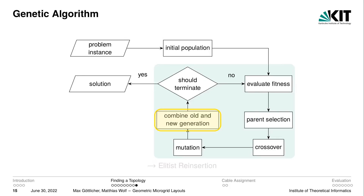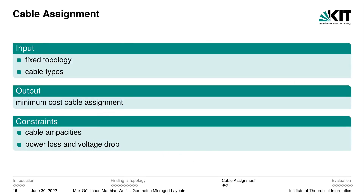After this we have a population of child individuals and parents which need to be recombined. What we use here is elitist reinsertion, a generic operation which uses the best parents and fills the population with children until the desired population size is reached. Next I will explain how we can compute a cable assignment.